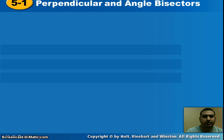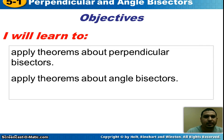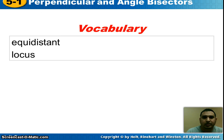Alright, so today we start chapter 5. We're talking about perpendicular and angle bisectors. The objectives you need to have written down on your notes will be: I will learn to apply theorems about perpendicular bisectors, and I will learn to apply theorems about angle bisectors. Vocabulary that also needs to be written down is equidistant and locus.